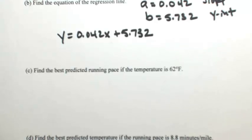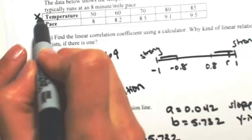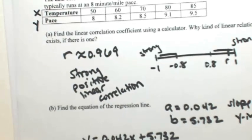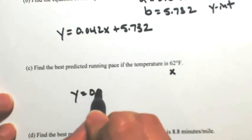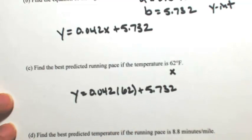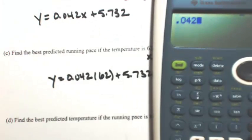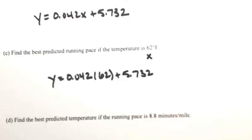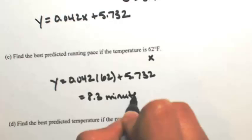Now that we have the equation, we can find the best predicted running pace when given a temperature. List 1 represented X (temperature) and List 2 represented Y (pace). If the temperature is 62 degrees, plug it in: Y = 0.042 times 62 plus 5.732. We get a pace of about 8.3, so it'll take about 8.3 minutes to run a mile.